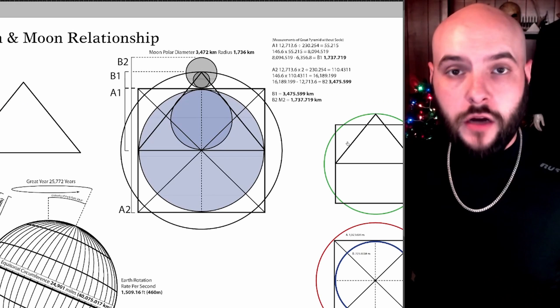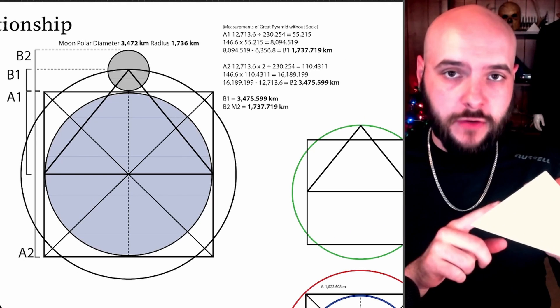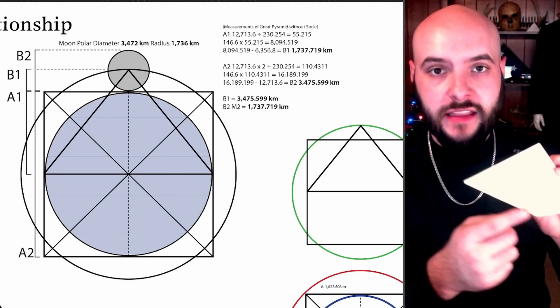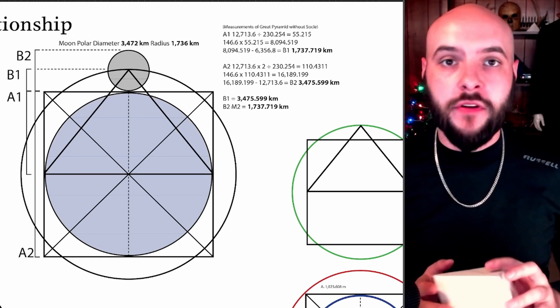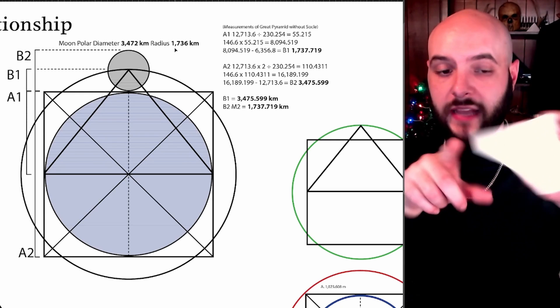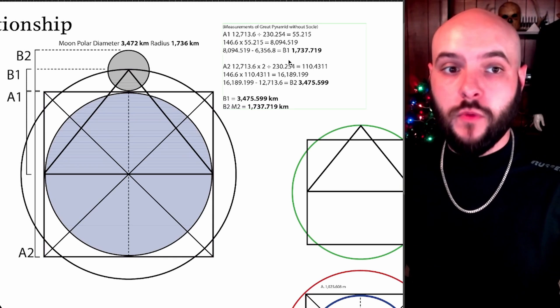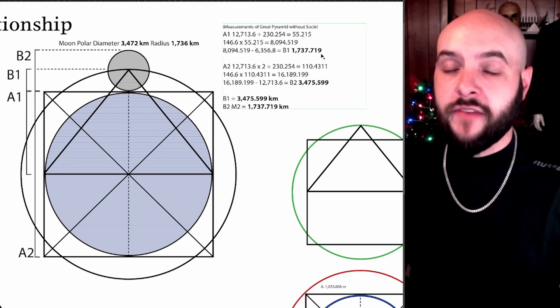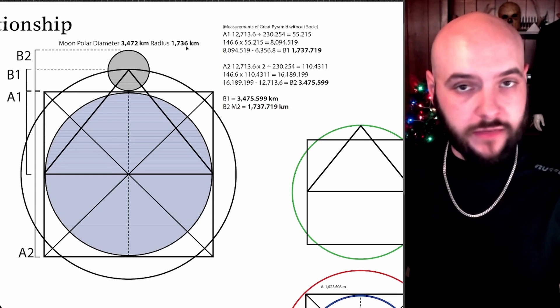So let's just do a quick overview of the earth moon ratio found in the dimensions of the Great Pyramid. Let's imagine we could take the Great Pyramid and scale it up to where the length of its base equaled the polar diameter of the earth at 12,713.6 kilometers. The height of that giant pyramid, if folded flat, would protrude out from the edge and the amount that extends from its edge equals 1,737.719, which is the polar radius of the moon at a remarkable level of accuracy.